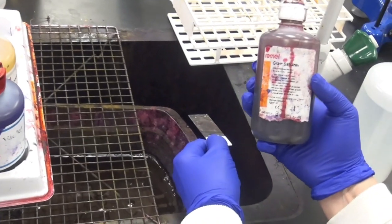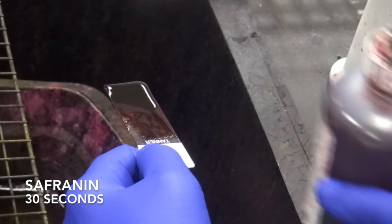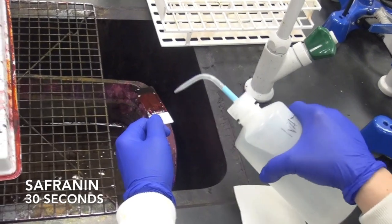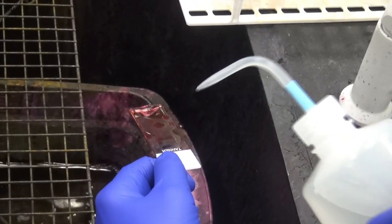The fourth and final step of this procedure is to flood the slide with counterstain, saffronin. This will stain pink and is used to visualize the Gram-negative organisms.